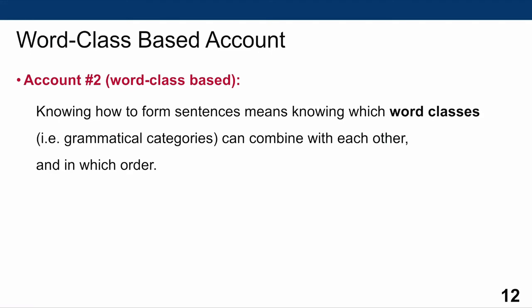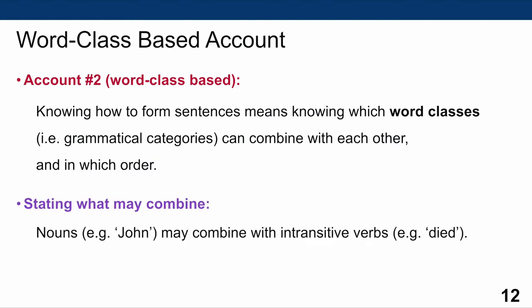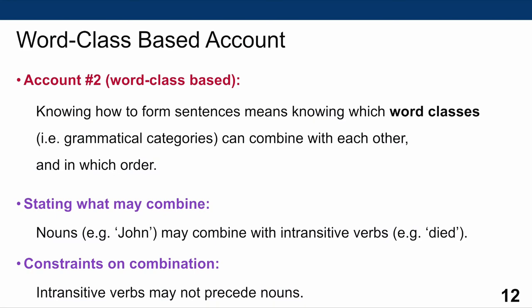This shows that the category is really what determines the combinatorial possibilities of items in a sentence. So let's incorporate this insight about word class behavior and come up with a word class-based account. Knowing how to form sentences means knowing which word classes — that is, grammatical categories — can combine with each other and in which order. For example, stating what may combine, we might now say that nouns may combine with intransitive verbs — for example, 'John' may combine with 'died' to form 'John died.'